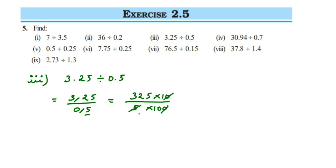Cancelling in the 5 table: 5 ones are 5, 5 sixes are 30 with remainder 2, making 25; 5 fives are 25. We get 65 upon 10, which converts directly to 6.5. We could also cancel further to get 13 upon 5, which when divided also gives 6.5. The answer is 6.5.